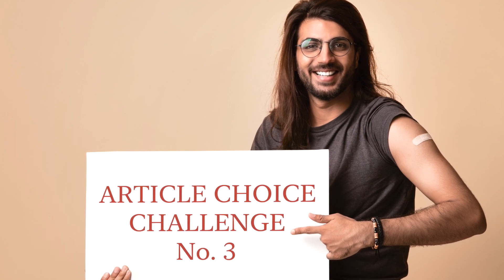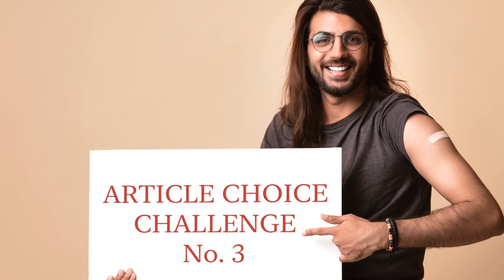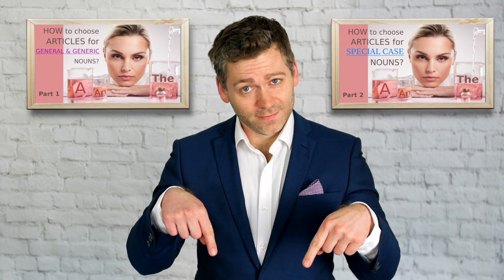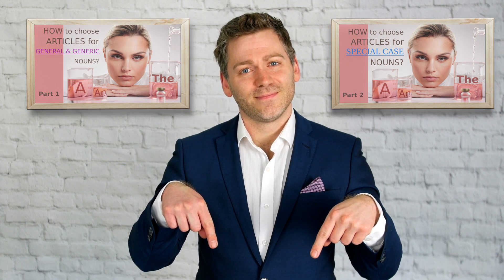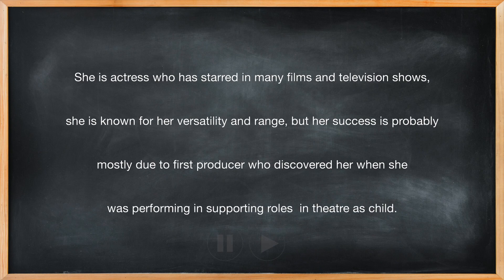Let's do some more practice of our technique for choosing the right articles for our nouns. If you're not sure how to analyse nouns and choose the right article, you will find links to videos explaining everything you need to know in the description below. Here's another sentence with the articles removed. Pause the video and see if you can figure out which words are the nouns, if they need articles, and if so, which article would be the best choice. I'll give you the answers in a moment.